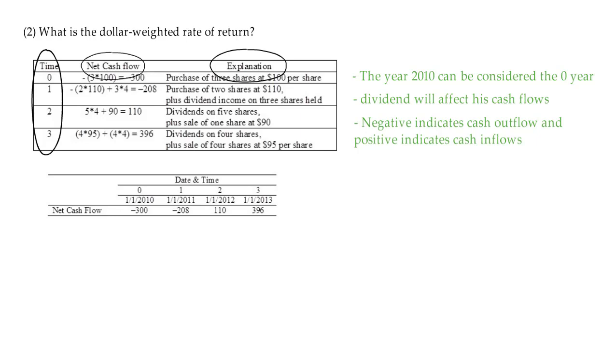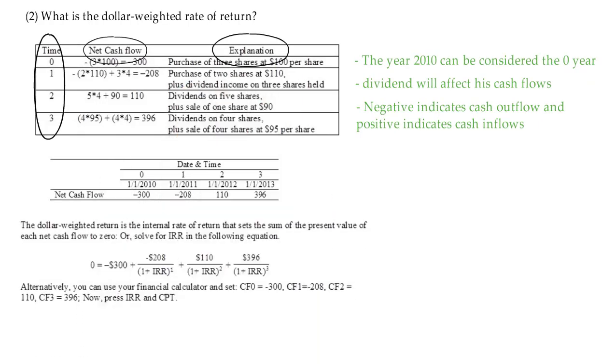Net cash flow in year zero is negative 300. Year 1 is negative 208. Year 2 is 110. Year 3 is 396. The dollar weighted return is the internal rate of return, or IRR, that sets the sum of the present value of each net cash flow to zero.